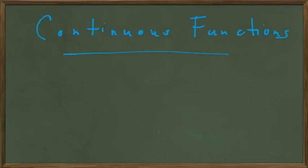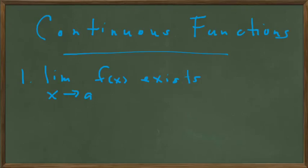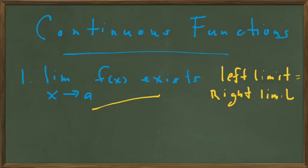First, let's give the three-part definition of continuity, both formally and informally. For a function to be continuous, the limit as x approaches a of f of x must exist. In informal language, that means the right limit must equal the left limit.